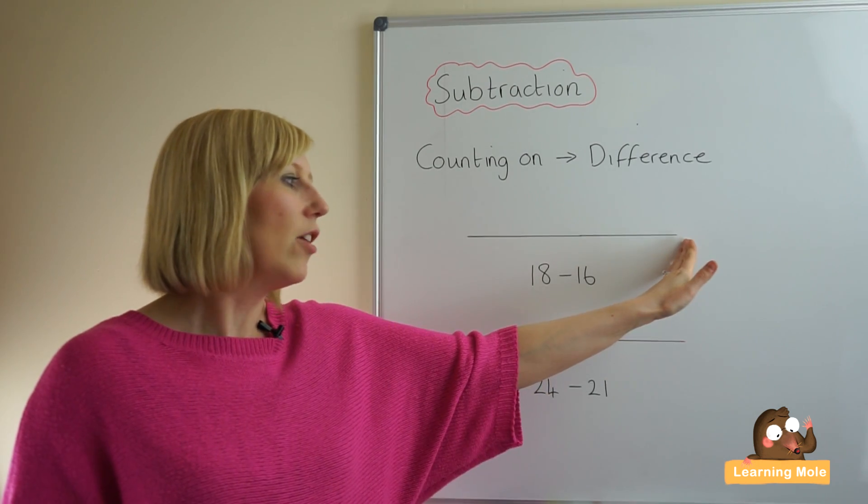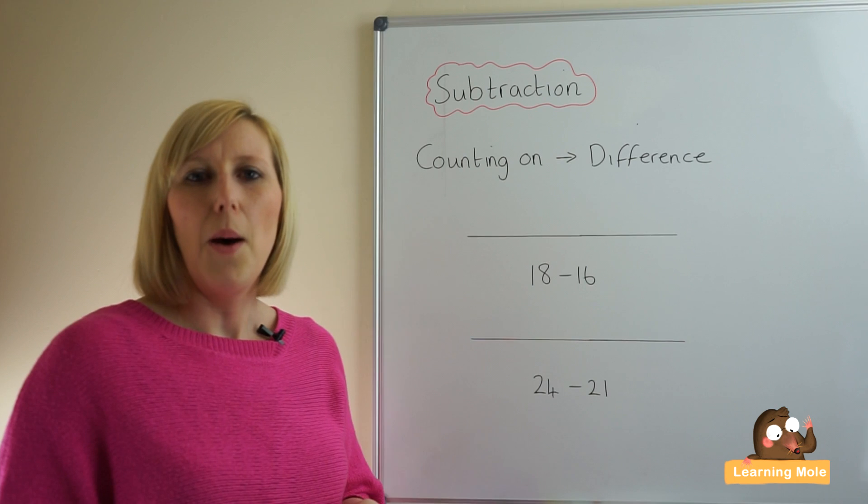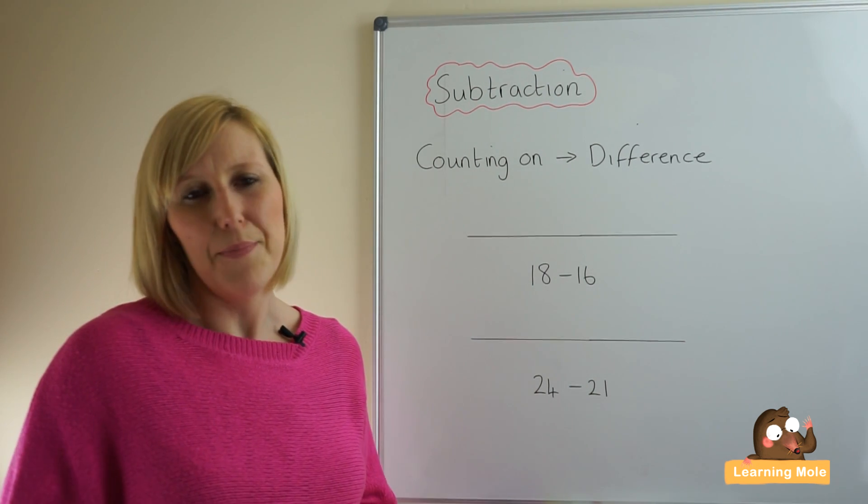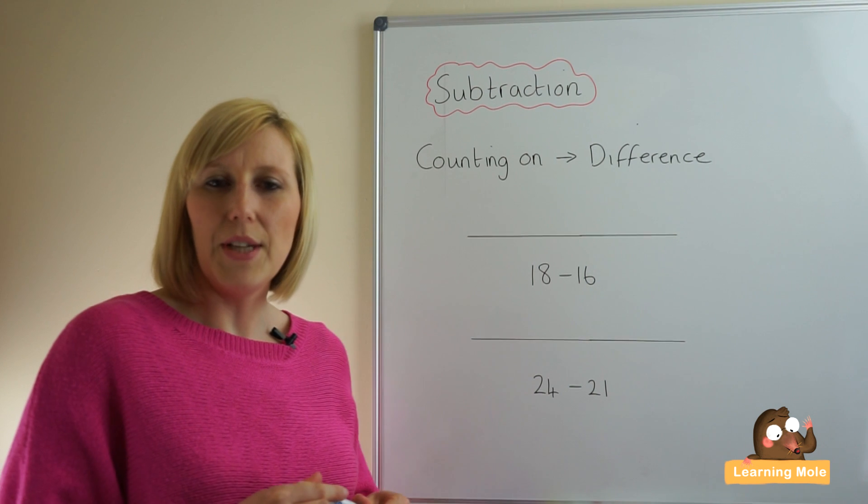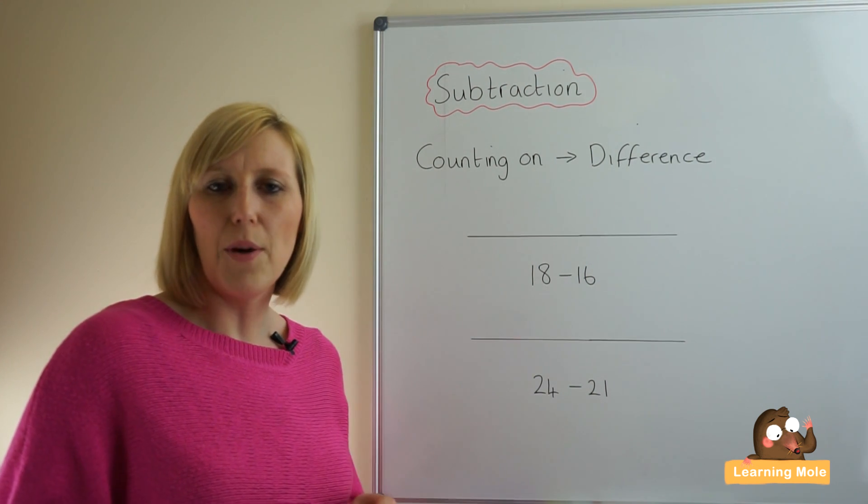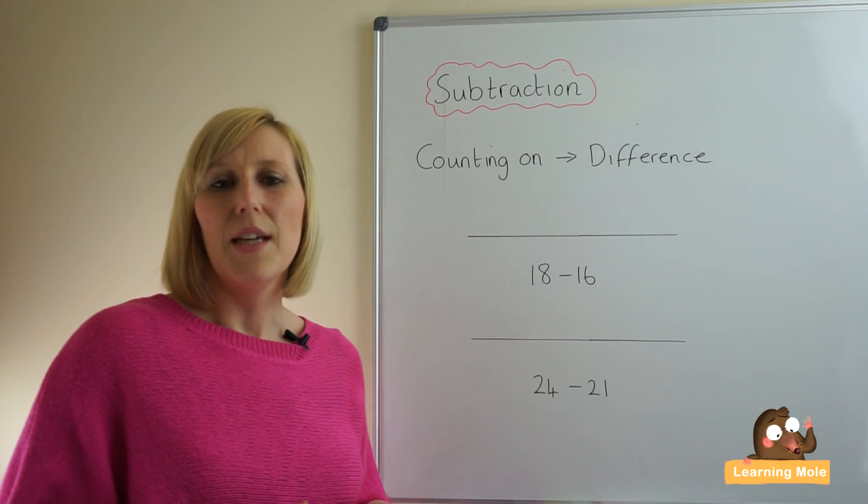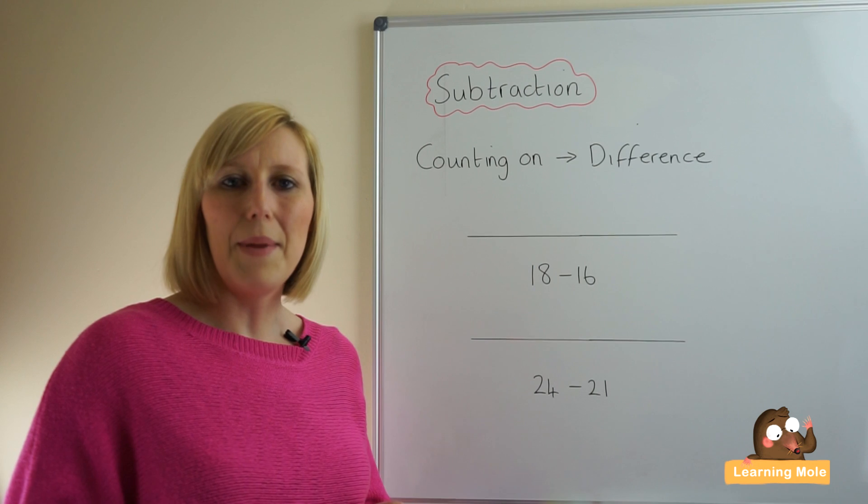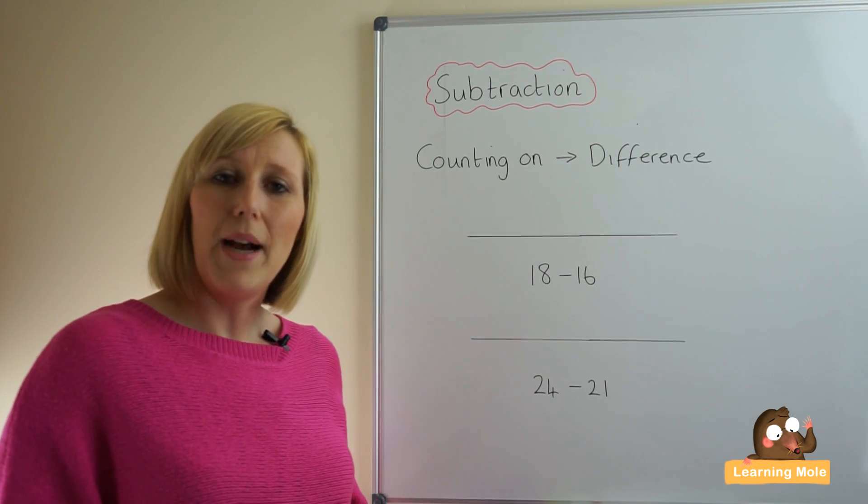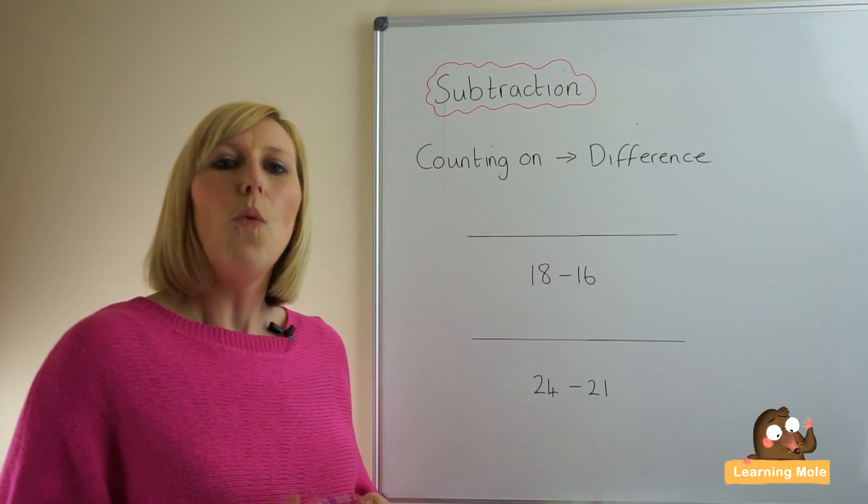Let me just talk about taking away or counting back. Of course we could do that for this strategy, we could put 18 here and jump back in steps of one for 16, but how many steps are you going to have to jump back? 16—it's a lot of opportunities there for inaccuracy, a lot of opportunities for miscalculating or miscounting, and it can be quite difficult to remain accurate in a calculation such as this. Hence why counting on is a very good strategy.